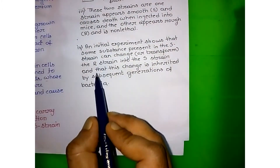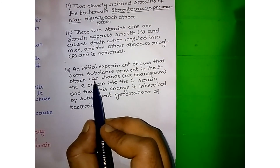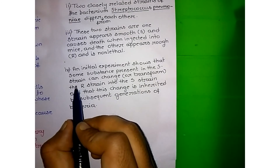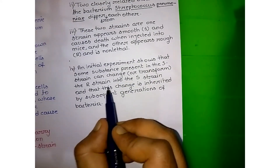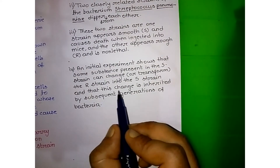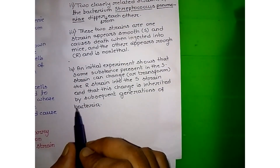This initial experiment shows that some substance present in S-strain can change or transform the R-strain into S-strain, and that this change is inherited by subsequent generations of the bacteria. This is the conclusion of the first experiment.